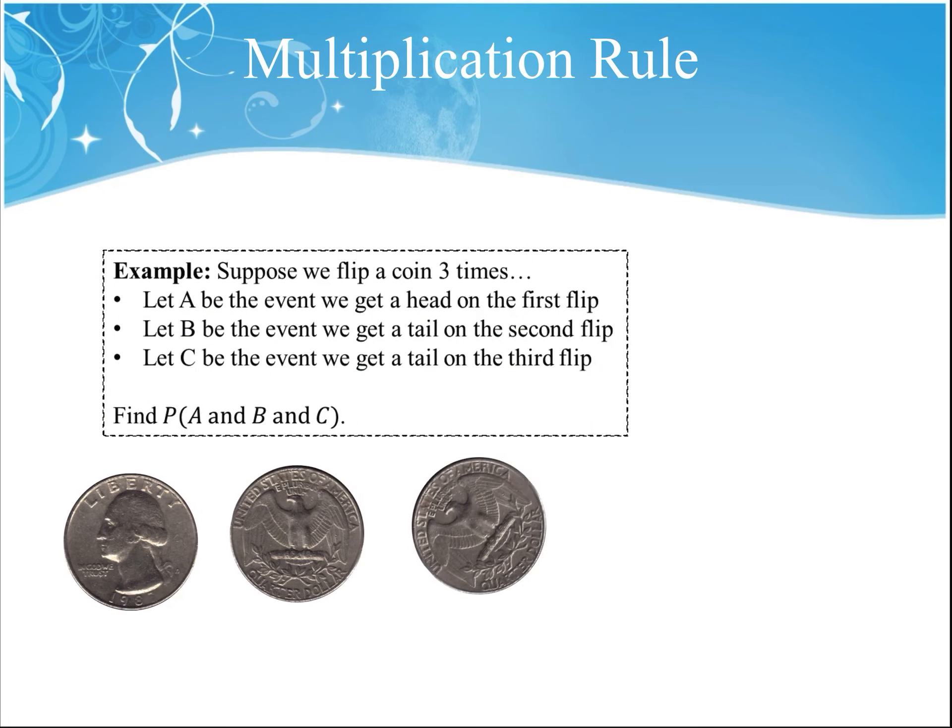For example, let's suppose that we flip a coin three times. Let A be the event that we get heads on the first flip, let event B be the event that we get tails on the second flip, and C be the event that we get tails on the third flip. Let's find the probability that we would get heads, then tails, then tails.